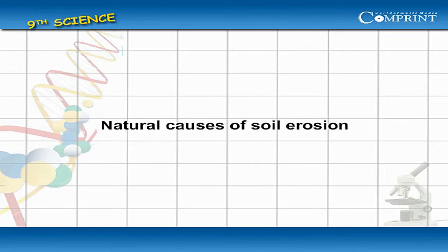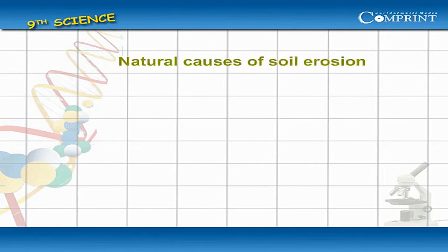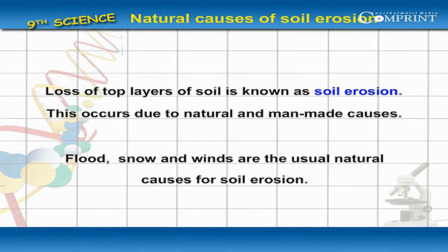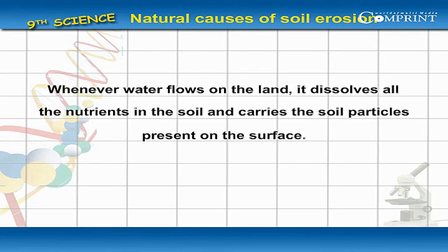Loss of top layers of soil is known as soil erosion. This occurs due to natural and man-made causes. Flood, snow, and winds are the usual natural causes for soil erosion.